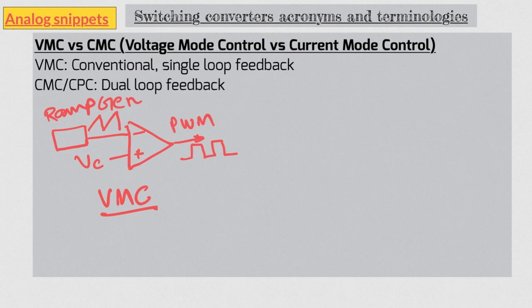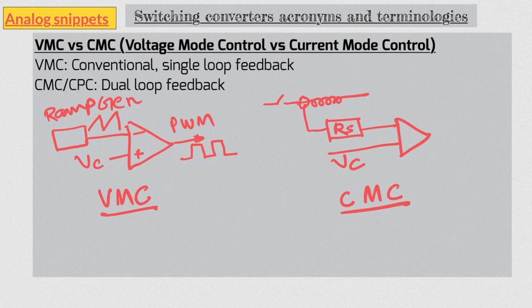One of the most common implementations is peak current control. In this scheme the peak current of inductor is measured and compared against the control voltage. Here RS is used to convert the inductor current into voltage. In practice current of the switches are sensed and compared against the control voltage. So you can see the dual loop in CMC's structure. The first loop is the voltage loop which is coming via this VC voltage, and the second loop is this inductor current sense loop. Eventually these two loops are combined to generate the PWM signal.